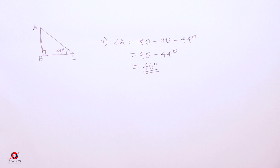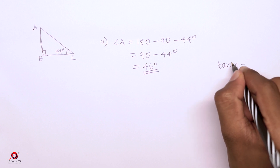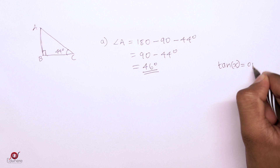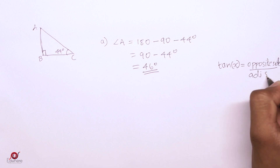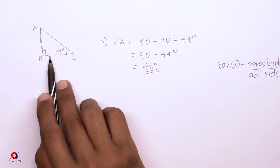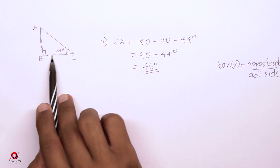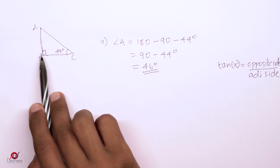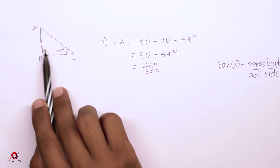Now for question B: which among the following is tan 44 degrees? Tan of an angle x is equal to opposite side divided by adjacent side. For angle 44 in our triangle, the opposite side is AB and the adjacent side is BC. So tan 44 is equal to AB by BC.